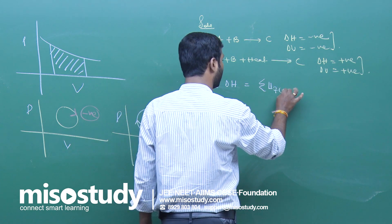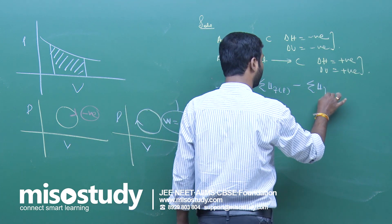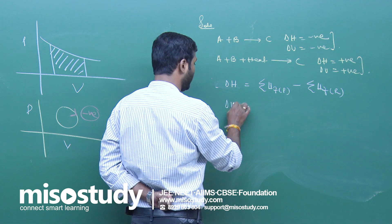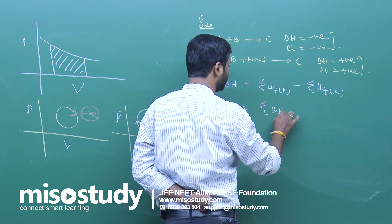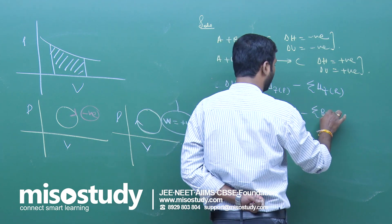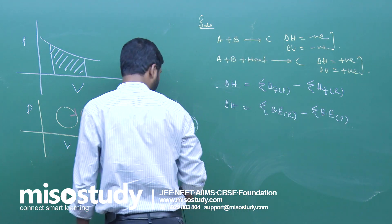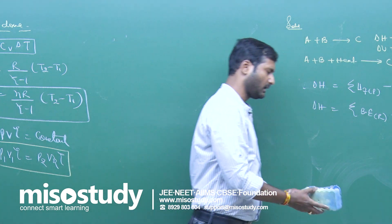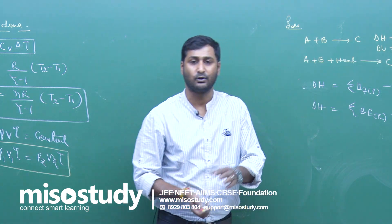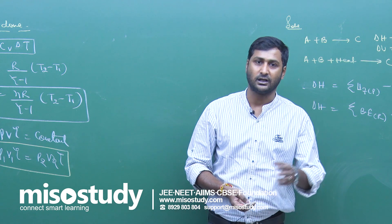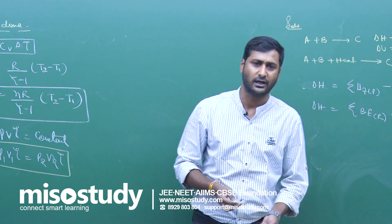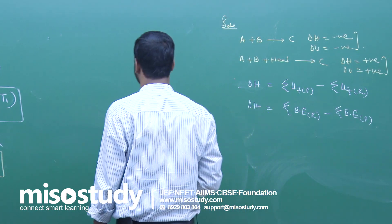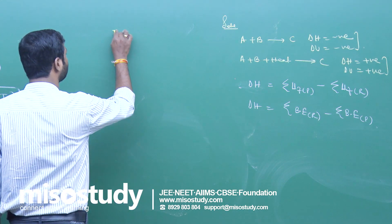The heat of reaction, delta H, equals the summation of heats of formation of products minus the summation of heats of formation of reactants. For bond energies: delta H equals summation of bond energies of reactants minus summation of bond energies of products. This formula applies to heat of neutralization, formation, combustion, solution, and allotropic changes.